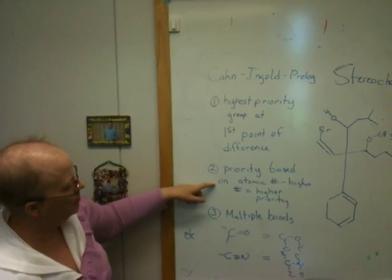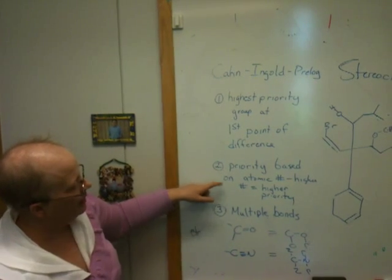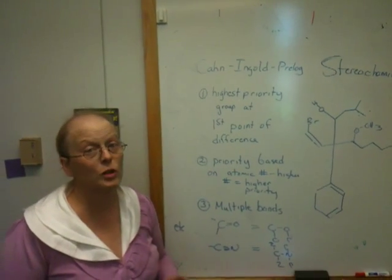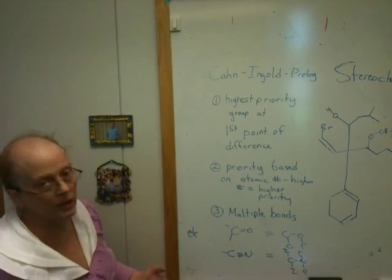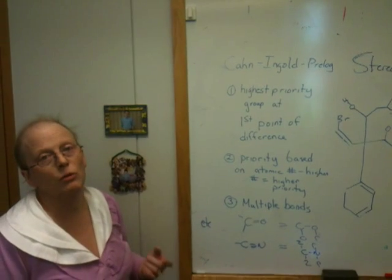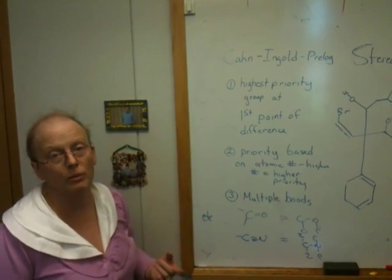Priority is based on the atomic number, and the higher the atomic number, the higher priority. But it's at the first point of difference, and that's what students usually have trouble with. The other thing we're going to illustrate here is how you deal with multiple bonds when you're doing priorities.